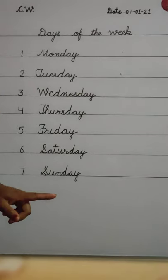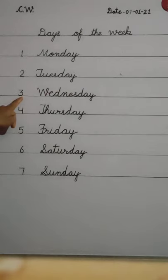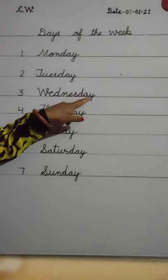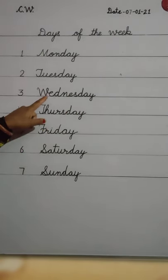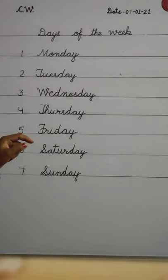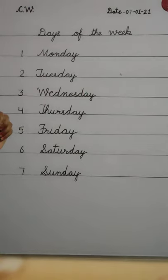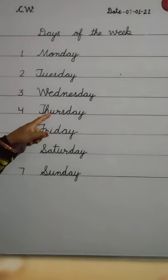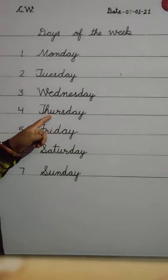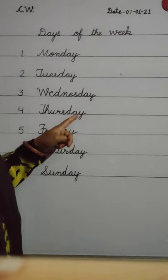Which is the third day of the week? Wednesday. W-E-D-N-E-S-D-A-Y. Wednesday. Fourth day of the week is Thursday. T-H-U-R-S-D-A-Y. Thursday is the fourth day of the week.